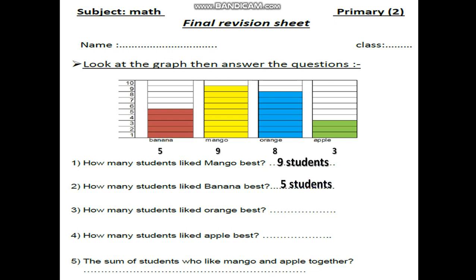Question number 3: How many students like orange best? From the graph, orange are 8 students. 8 students like orange. How many students like apple best? From the graph, they are 3 students.